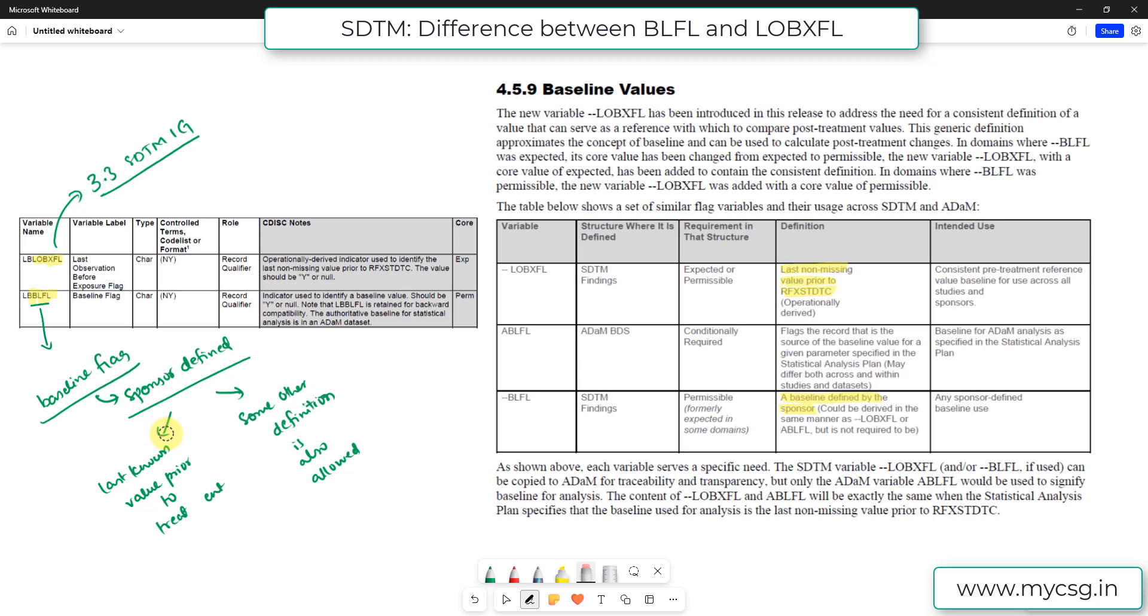So in most cases we know that the value in the baseline definition is last known value prior to the treatment start date. But there can be cases wherein there is an alternate definition which the sponsor could choose from, something like the screening value could be considered as baseline. And if there could be multiple collections during the screening period, they may prefer to choose to populate the earliest one or the latest one or the maximum or the minimum observed during screening period as baseline.